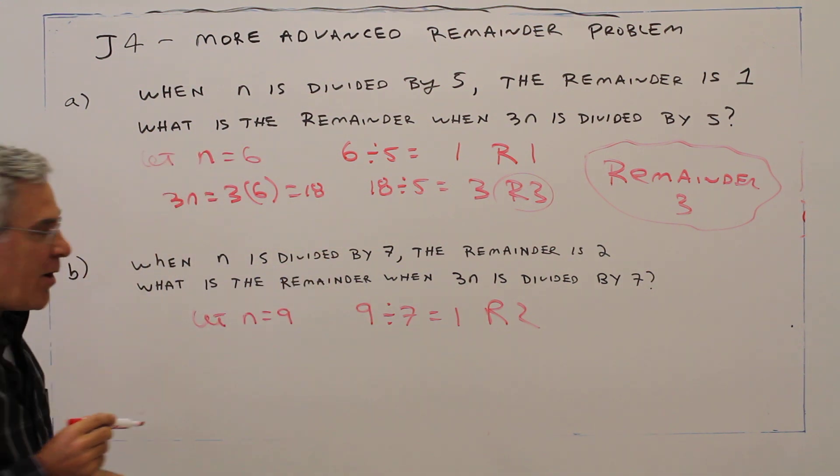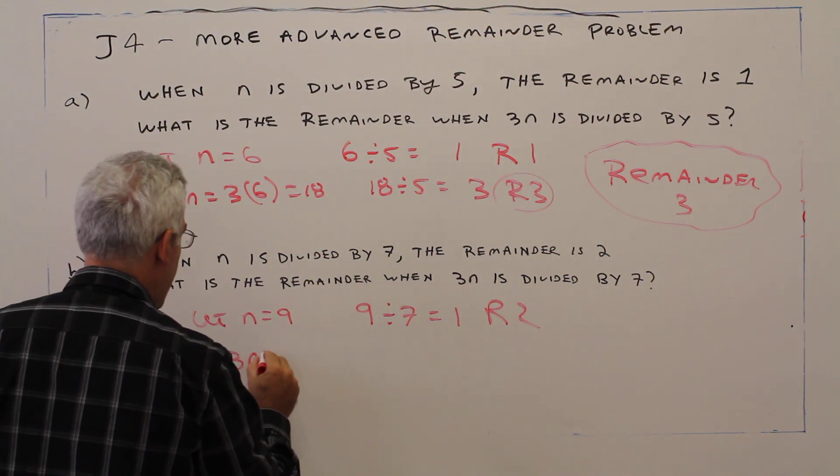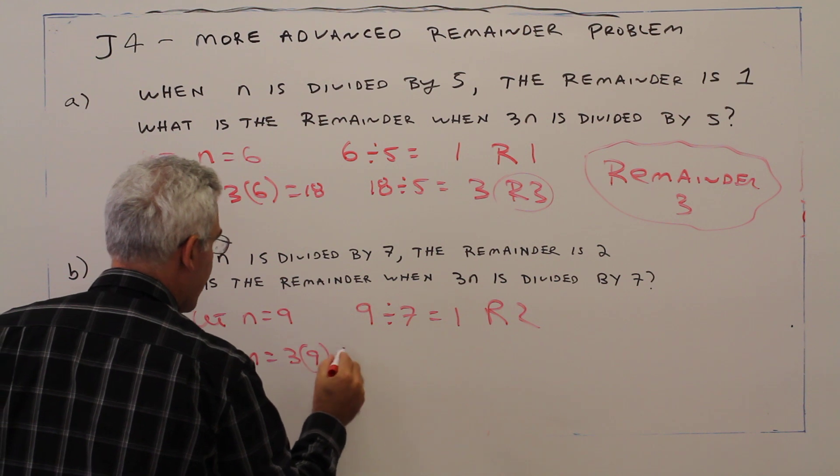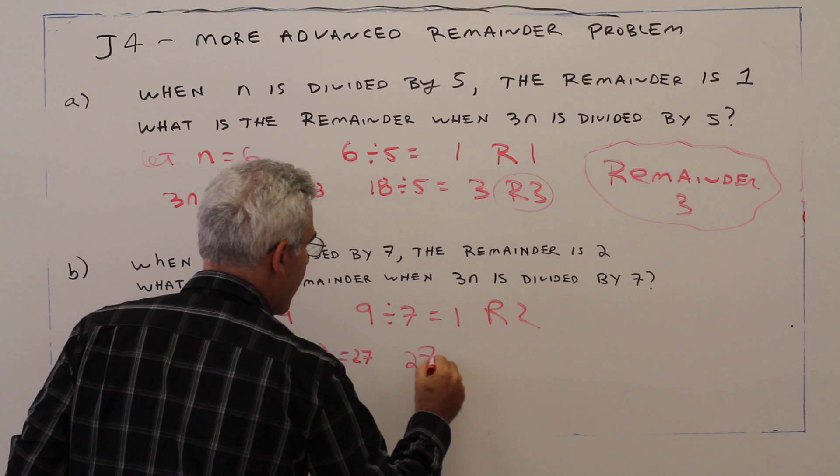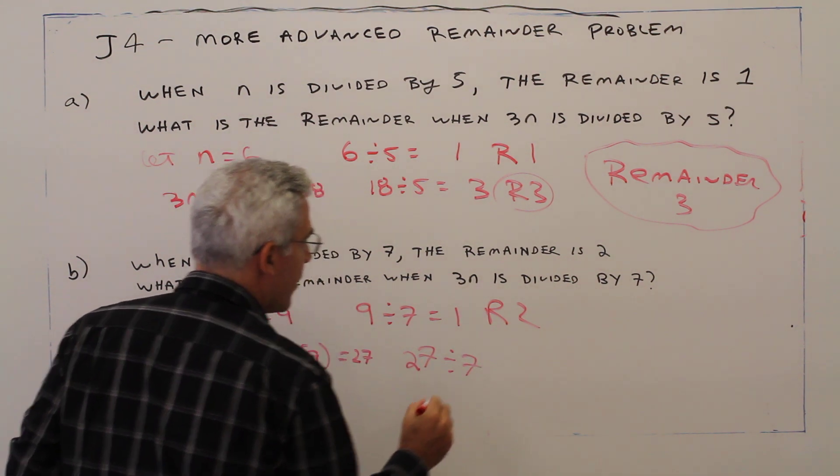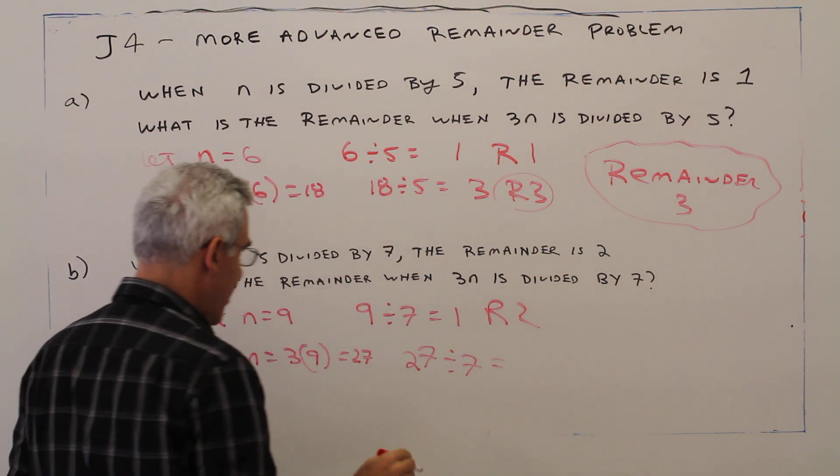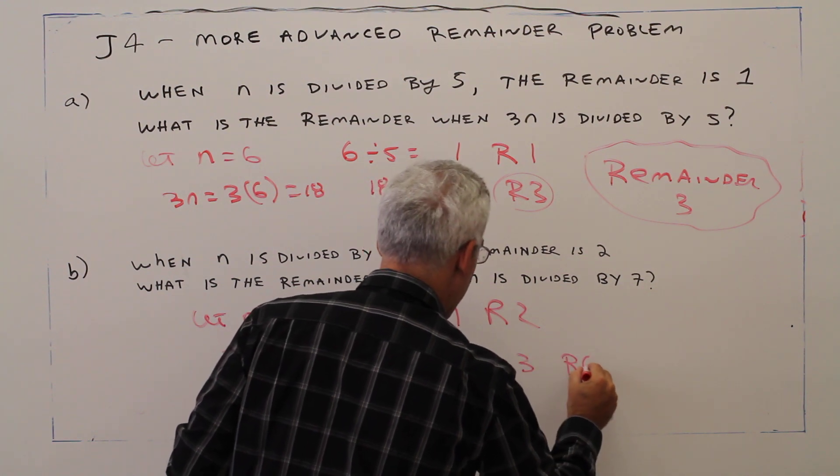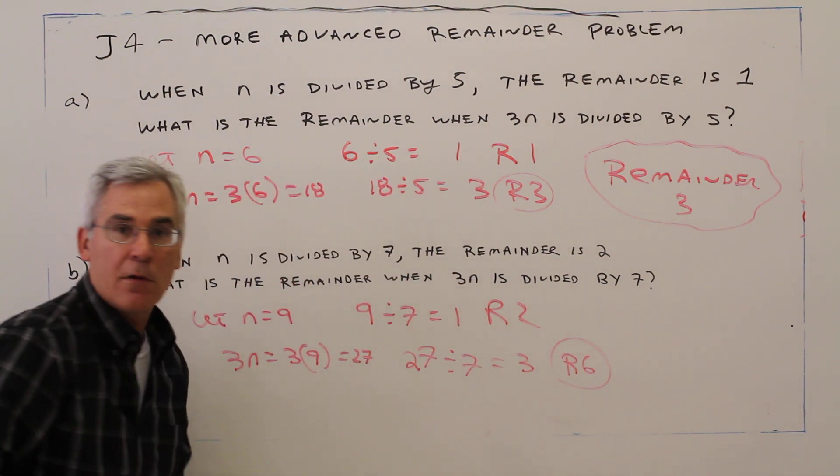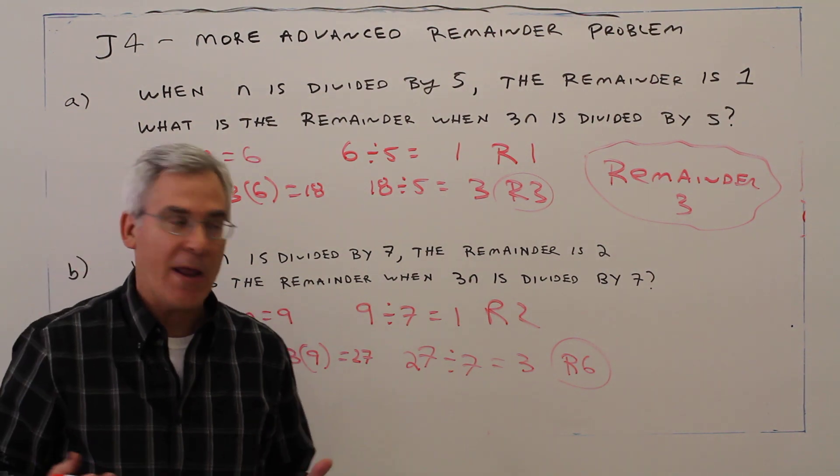Now just 3n. 3n equals 3 times 9 equals 27. 27 divided by 7 is going to be 3, remainder 6. So the answer is going to be 6.